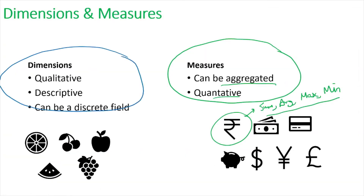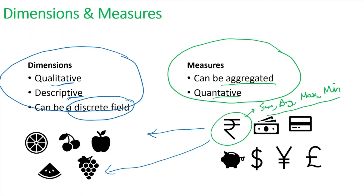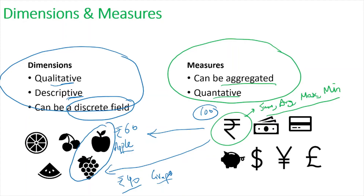Dimensions should be qualitative — they contain descriptions or add context to your data. For example, if measure is money and you're spending it buying apples and grapes — 60 rupees on apples and 40 rupees on grapes — then apples and grapes are adding context to the money. Those items are the dimensions; they show how the money is distributed.